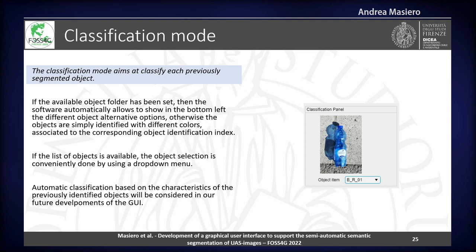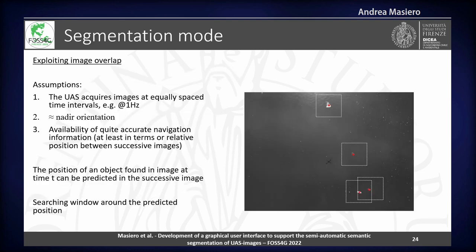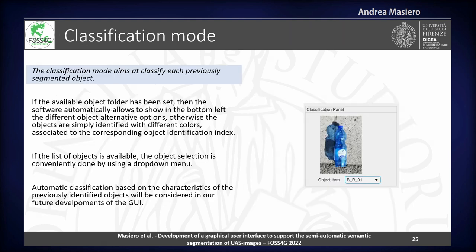For what concerns classification, it is something that we are still working on. For now, classification is mostly based on the manual selection of the object, and the manual selection can be propagated in the way that you have just seen by means of this kind of tool. But for now it is mostly manual — we are going to work a little bit more on this step in our future development.